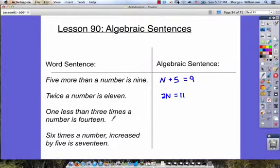The next one says one less than three times a number is 14. So one less, well that must mean subtraction, and one less than three times a number, well three times a number must be three times n minus one because it's one less than that. The whole thing is equal to 14. So we've written our algebraic sentence given this word sentence.